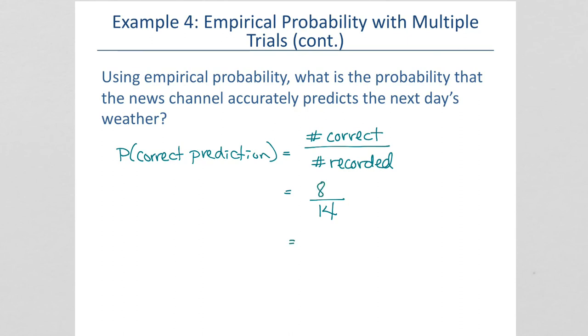And we can reduce that to 4 sevenths or 0.571429. And so, you could actually say that the probability that the news channel is correct is about 57%. They're correct about 57% of the time. Not very good.